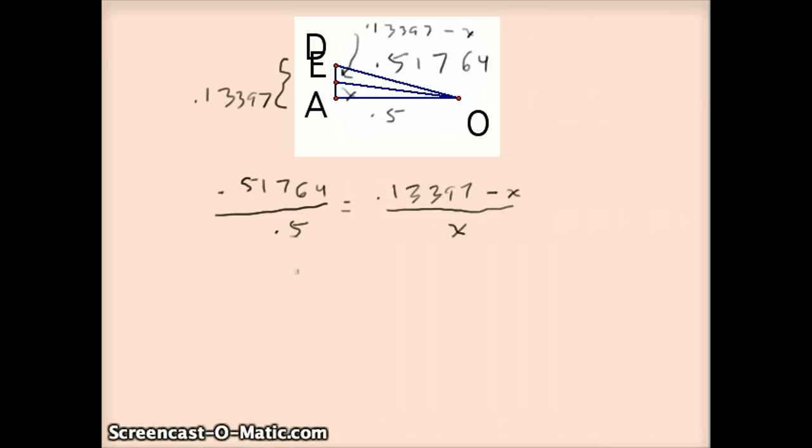When I cross-multiply, I get 0.51764X equals 0.066985 minus 0.5X. Add the 0.5X to both sides to get 1.01764X. And when you divide both sides by this 1.01764, you get an answer for X is 0.06583.